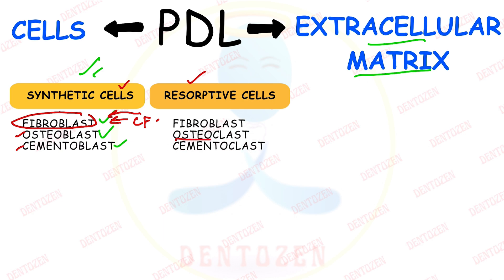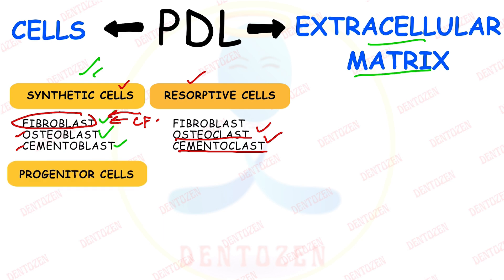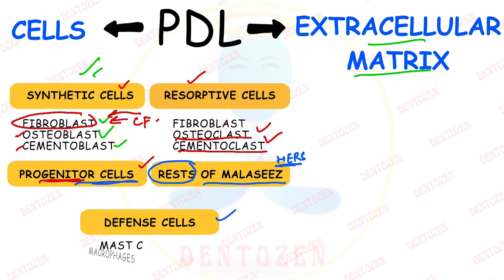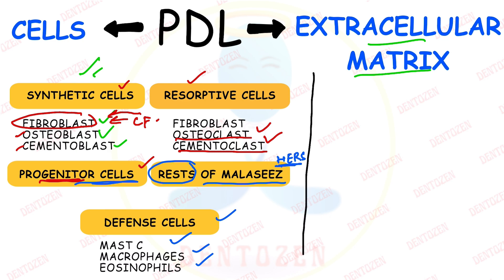The third type of cells are progenitor cells, which divide and form new cells to replace dying cells. The fourth are rests of Malassez — remnants of the Hertwig epithelial root sheath that remain in the periodontal ligament. The fifth type are defense cells of PDL, which can be mast cells, macrophages, and eosinophils. Those are the five cell types of PDL, to be discussed in detail in the next video.